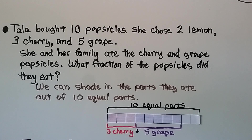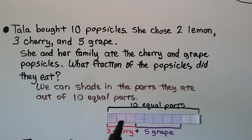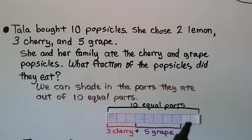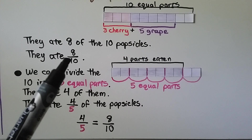Tala bought ten popsicles. She chose two lemon, three cherry, and five grape. She and her family ate the cherry and grape popsicles. What fraction of the popsicles did they eat? We have ten equal parts for the ten popsicles — three were cherry, five were grape, two were lemon. But they ate the cherry and the grape ones. Three plus five is eight. They ate eight of the ten equal parts — eight-tenths.